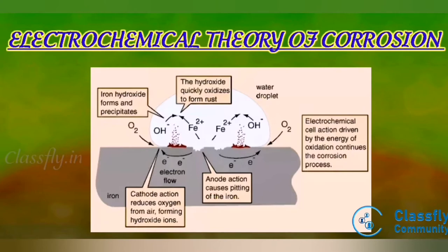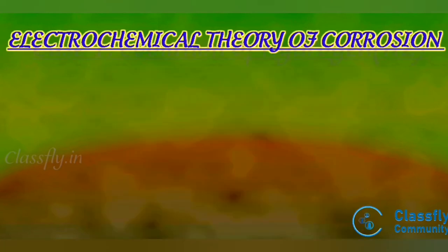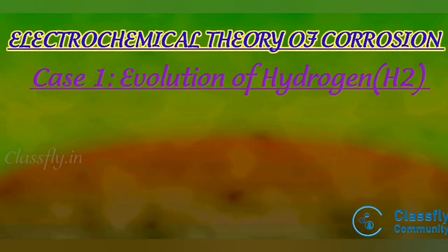Oxidation of the anodic part takes place, resulting in corrosion at the anode, while reduction takes place at the cathode. The corrosion product is formed on the surface of the metal between the anode and cathode. There are two cases: Case 1 is evolution of hydrogen.